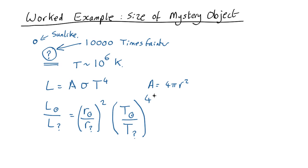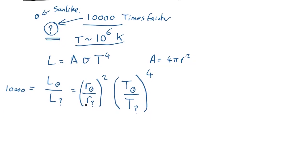Okay, so what can we do with this? Well, we know this ratio is equal to 10,000. We know the radius of the Sun-like star because it's the same as the Sun and the temperature of the Sun-like star. We know the temperature of the mystery object because we've measured it from our x-ray observations, so the only thing we don't know is the radius of the mystery object. So let's rearrange this to get that as a subject.